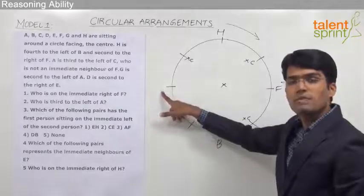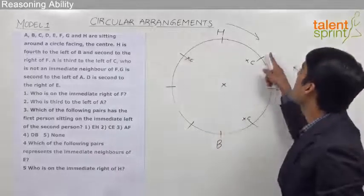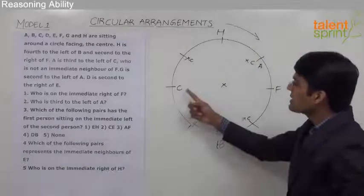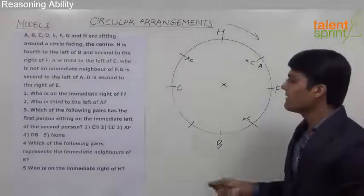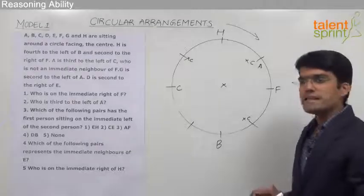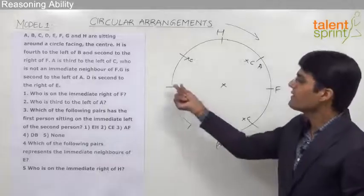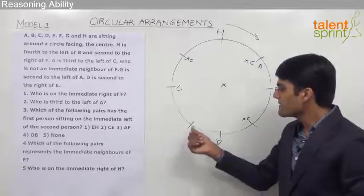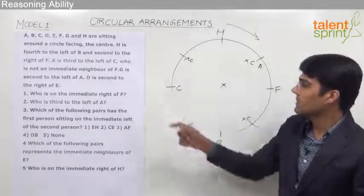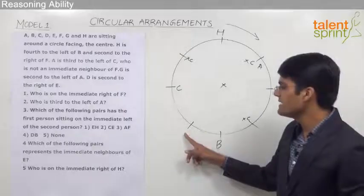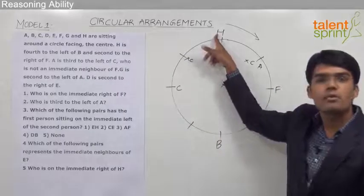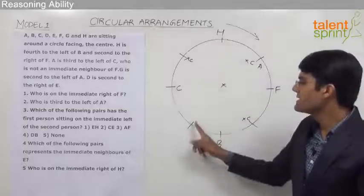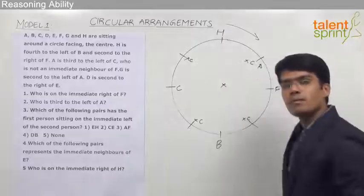The second possibility for C: if C comes here, A should be third to the left of C — 1, 2, 3 — so A can come in that place. We are marking this tentatively within the circle since it is not yet confirmed. The third possibility: if C comes here, third to the left of C in the clockwise direction — 1, 2, 3 — that position is already occupied by H, so A cannot come there. Therefore, C cannot come in this position either.